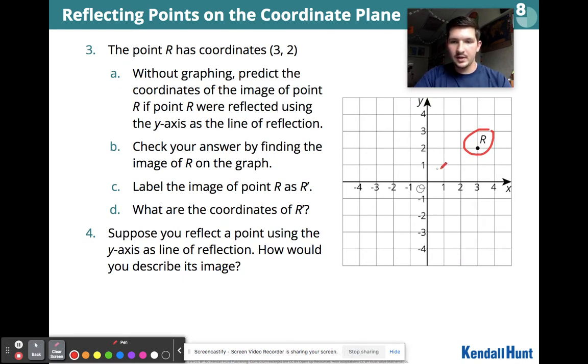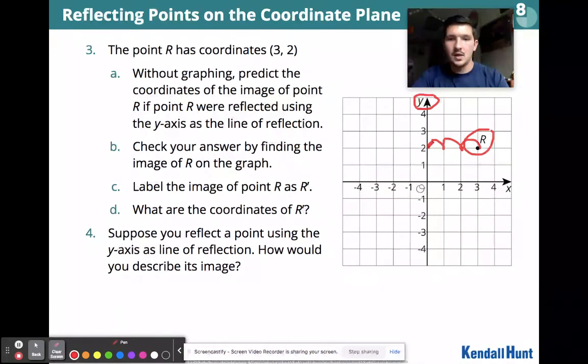Hopefully you figured it out. If we're trying to reflect over the Y axis, that means if we're 1, 2, 3 spaces away from the Y axis, then we're going to land 1, 2, 3 spaces away from it. So R is going to end up right there.